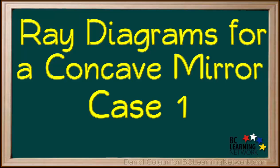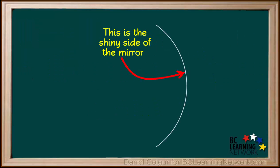Here we'll show you how to draw a ray diagram for a concave mirror when the object is outside the center of curvature. In a concave mirror, this is the shiny side of the mirror.